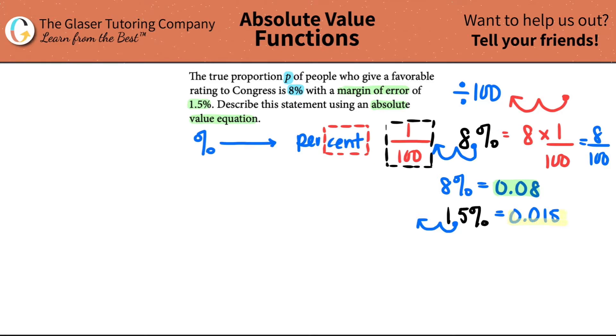So these are your two numbers that you're going to be working for. They're saying that the proportion of people who give a favorable rating to Congress is 8%. So that's a standard number in this problem. So it's 8%. However, there's always error, right? There's a margin of error. And they're telling us that the error is 1.5%, which is 0.015 in mathematical terms.